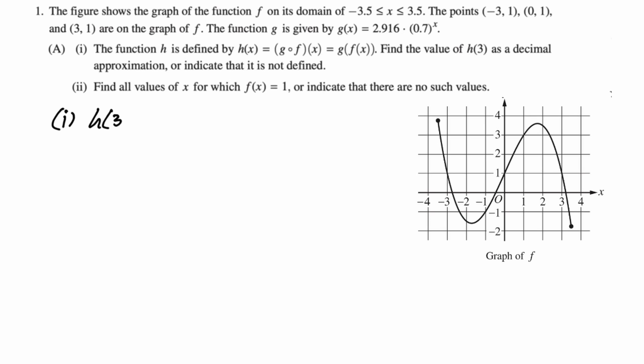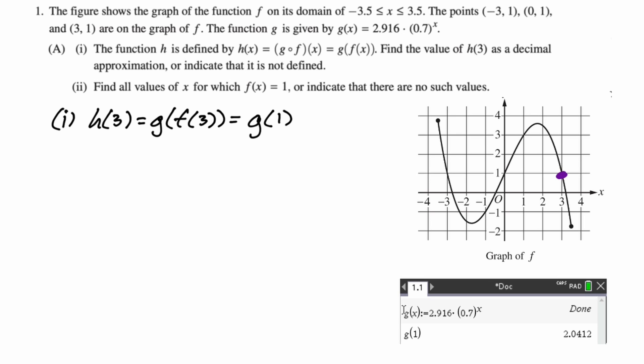First up, we want to say that h of 3 would be g of f of 3, assuming it's defined. We need to know f of 3. They gave that to us two different ways, once as an ordered pair up above and also on the graph here. So g of 1, because f of 3 is 1, so we're doing g of 1. We're going to need a calculator for g of 1. So I typed in g of x on my calculator, and then I did g of 1. I got 2.0412. I go with three decimal places, so 2.041. And that's pretty much it.